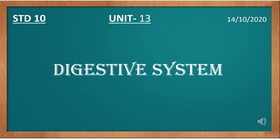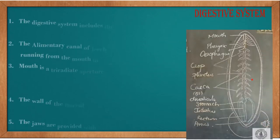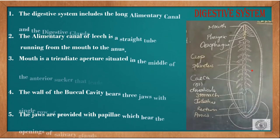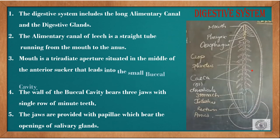In this lesson we shall learn about the digestive system of leech. The digestive system of leech includes the long alimentary canal and the digestive glands. The alimentary canal of leech is a straight tube running from the mouth to the anus.